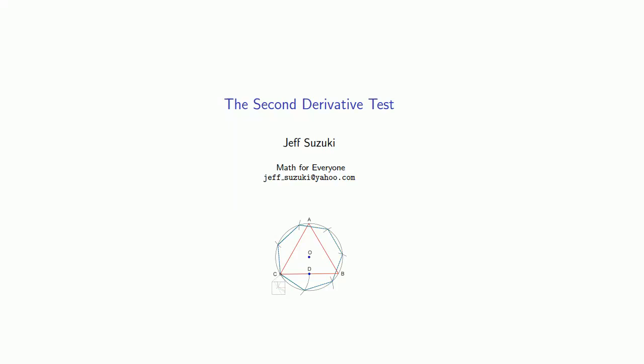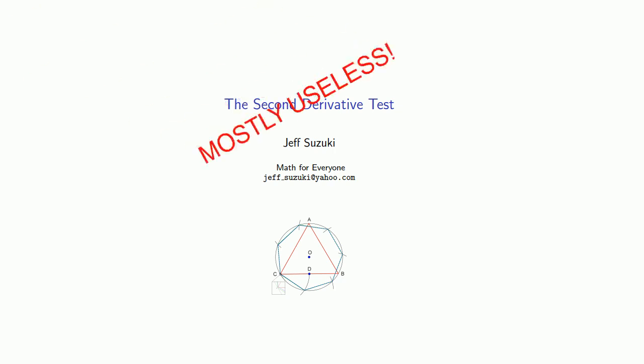One method we have of analyzing optimization problems is known as the second derivative test. And the most important thing to remember about the second derivative test is that it's mostly useless.